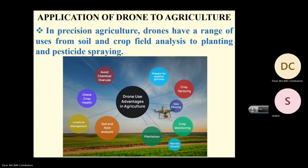In precision farming, one major application is the use of drones. Drones can be used for many agricultural surveys. Drone advantages in agriculture include avoiding chemical overuse, tracking crop health, livestock management, soil and field analysis, plantations, and crop monitoring.